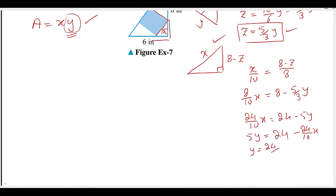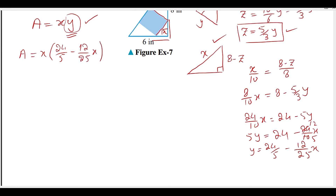12x. Now we substitute it here: y is equal to 24/5 minus 12/25 times x. If we expand it, this is 12/25 x squared. This is the function that we have to maximize.